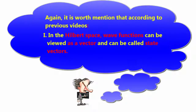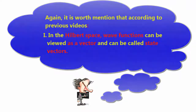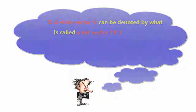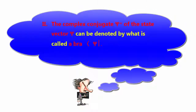It is worth mentioning, according to previous videos: 1. In the Hilbert space, wave functions can be viewed as vectors and can be called state vectors. 2. A state vector psi can be denoted by what is called a ket vector. 3. The complex conjugate psi star of the state vector psi can be denoted by what is called a bra.